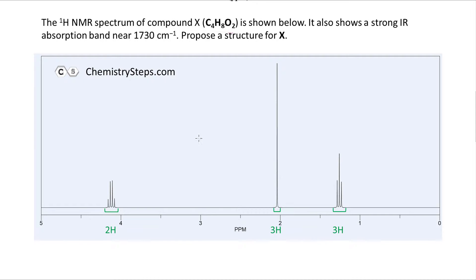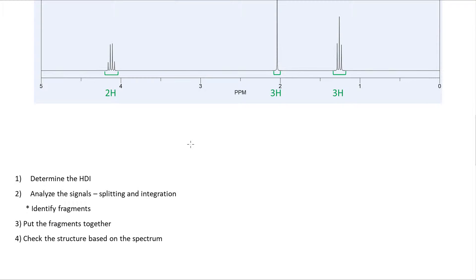When solving an NMR problem, we can make a plan to follow. The first thing is determining the hydrogen deficiency index, or HDI. This tells us whether the molecule has any double bonds, triple bonds, or a ring. There is a post on that you can check, and there is also a formula you can always use if assessing the HDI qualitatively is confusing.